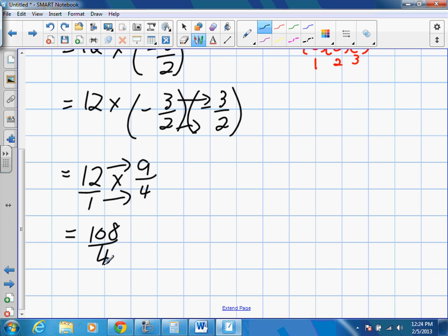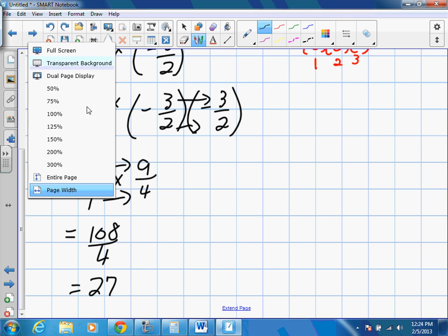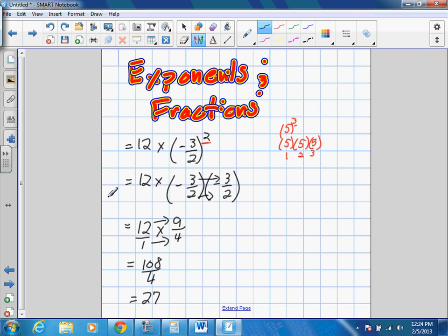27. Is that right? Yeah. There you go. Okay. So the exponent's actually really straightforward. We're just using our multiplication rules. We just have to know how to write them all. Okay.